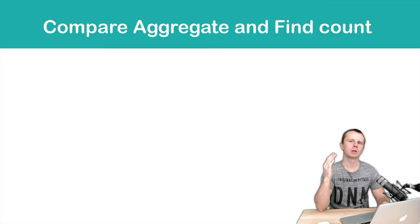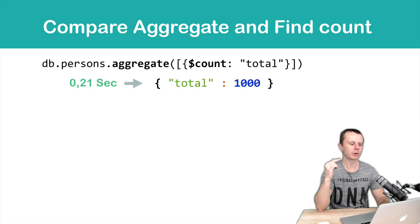But what about the count helper method that we used in the find method? Let's compare this method to the count stage in aggregation. In aggregation the result is 200 milliseconds and we get 1000 documents.